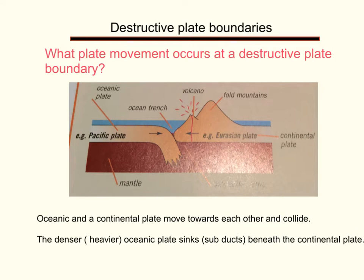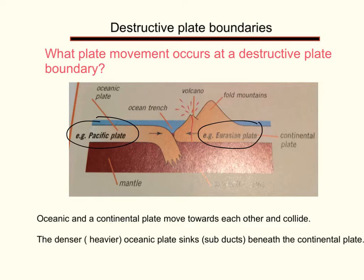The first question we're going to address is: what plate movement occurs at a destructive plate boundary? I have a clear diagram here. We have the Pacific plate and the Eurasian plate, and you can see their plate movement because the arrows are showing what direction the two plates are moving. We can see that they are moving towards each other — sometimes we call this converging.